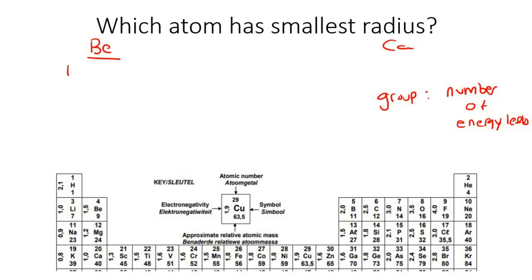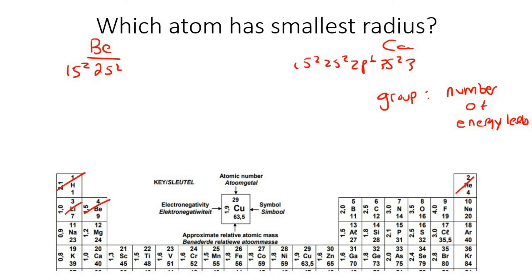If you look at the electron configuration of beryllium, you get 1s2, 2s2. For calcium, you get 1s2, 2s2, 2p6, 3s2, 3p6, 4s2. So beryllium only has 2 energy levels because it's in row 2 on the periodic table.